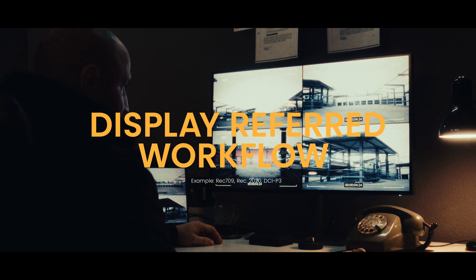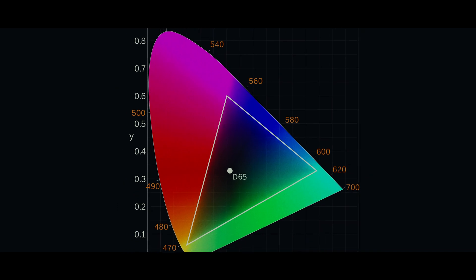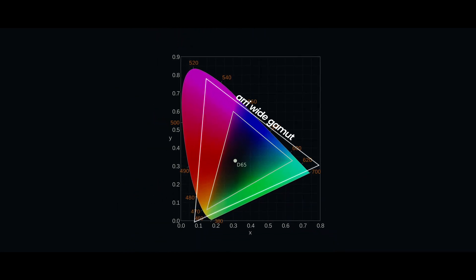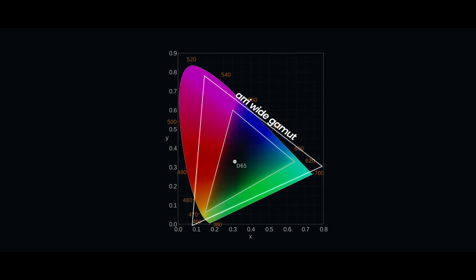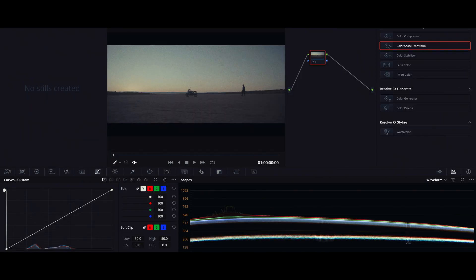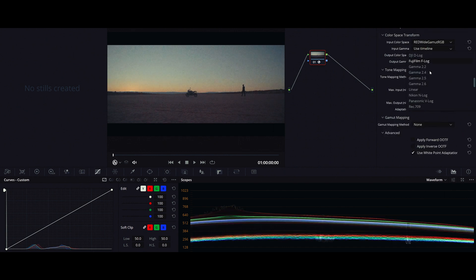Colorists and film professionals prefer grading in scene-referred color spaces because camera LOG and RAW were invented to capture with more flexibility and dynamic range. Camera color spaces or scene color spaces are designed to be bigger and wider. It naturally makes sense to manipulate the image in a bigger color space before the data is converted to a smaller one. Let's take a quick look inside DaVinci Resolve to see what I mean.